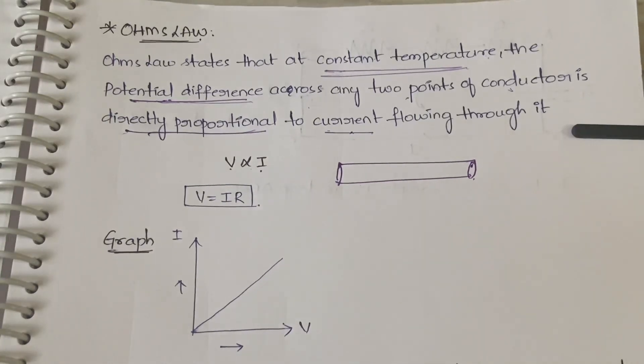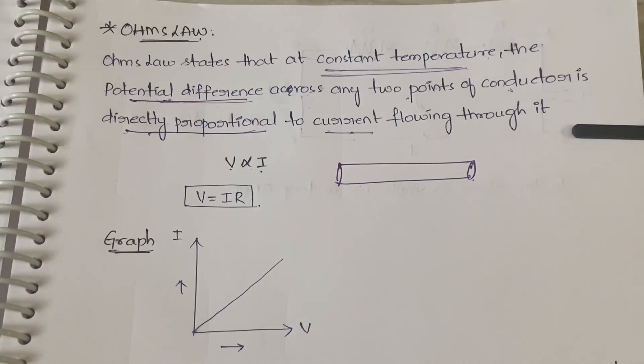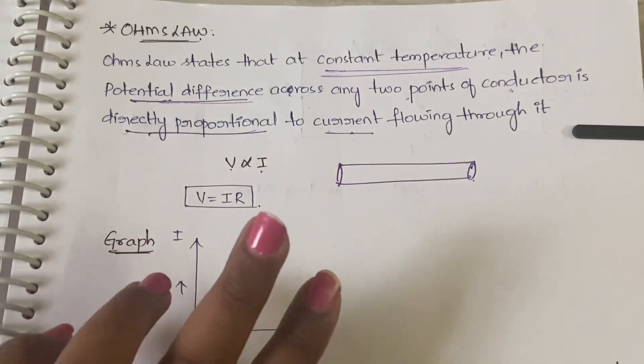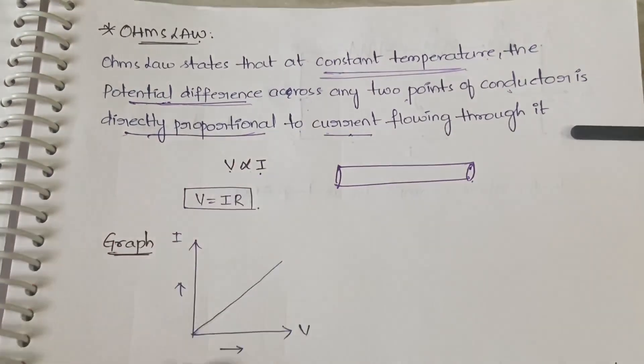That potential difference will be directly proportional to the current which is flowing in that circuit. That is Ohm's Law: V is directly proportional to I, where V is potential difference and I is current.